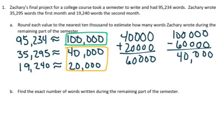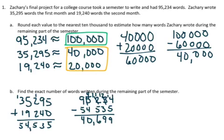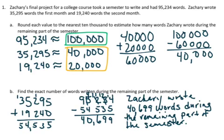So now we're going to find the exact number of words written during the remaining part of the semester. We're going to do the same steps, but now we have to use the actual numbers. So we have 35,295, and we're going to be adding 19,240, which gives us a total of 54,535. Now we're going to take the total number of words, 95,234, and subtract 54,535 to get a difference of 40,699. So Zachary wrote 40,699 words during the remaining part of the semester.